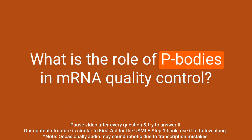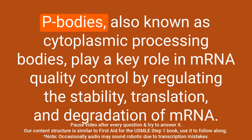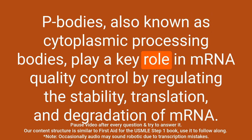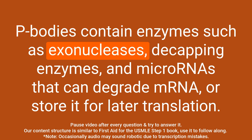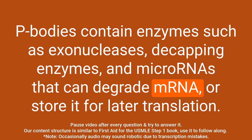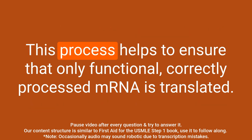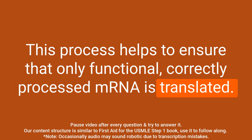Question: What is the role of P bodies in mRNA quality control? Answer: P bodies, also known as cytoplasmic processing bodies, play a key role in mRNA quality control by regulating the stability, translation, and degradation of mRNA. P bodies contain enzymes such as exonucleases, decapping enzymes, and microRNAs that can degrade mRNA or store it for later translation. This process helps to ensure that only functional, correctly processed mRNA is translated.